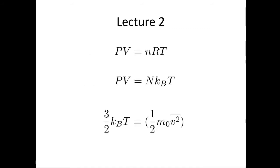In lecture two, we met the ideal gas law. We saw that there were two common forms of the ideal gas law: PV equals nRT, where n is the number of moles and R is the gas constant, 8.314. Or we can write it PV equals N, where N is the number of molecules, kBT, where kB is Boltzmann's constant.